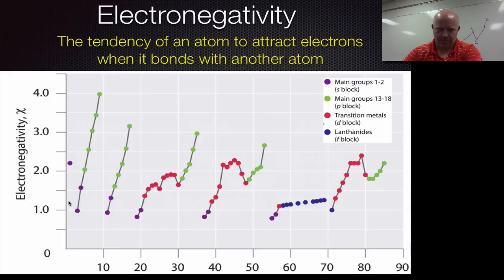So electronegativity is the tendency of an atom to attract electrons when it bonds with another atom. And if we look, it looks like purple is our main group S block, green is our main group P block, and then red is our transition metals here, our D block. So if you look, all of our main group, our alkaline metals and alkaline earth metals, those S block things, they have really low electronegativities. So their tendency or their ability to gain electrons is very low.